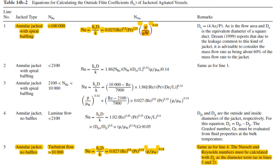Here is the equation for calculating the outside film coefficient of jacketed vessels. One thing to remember is that in the case of helical coils, the inside coefficient will be the outside and the outside coefficient will be the inside.